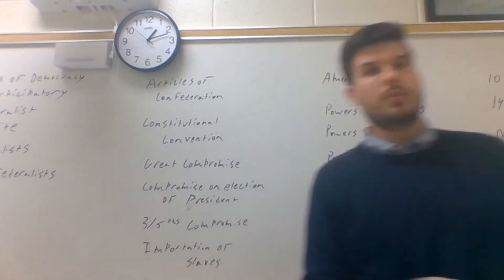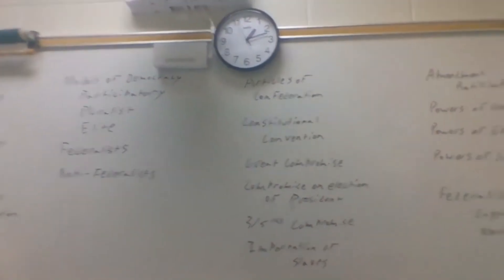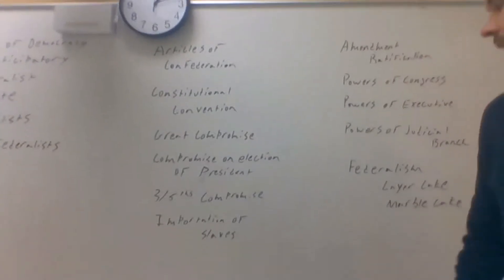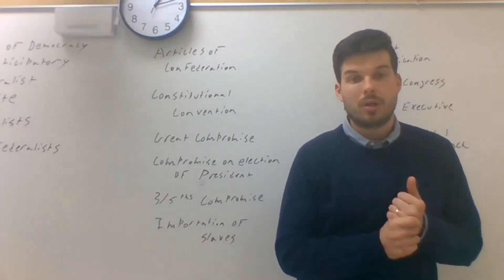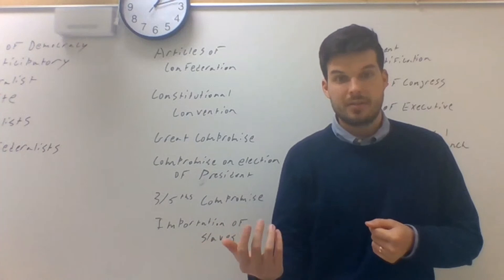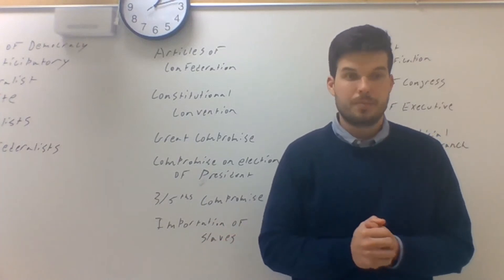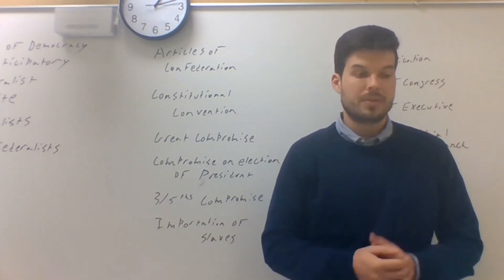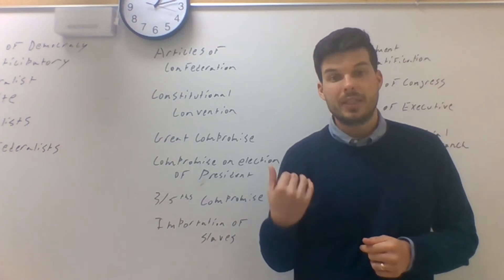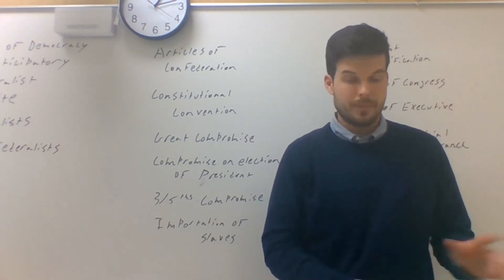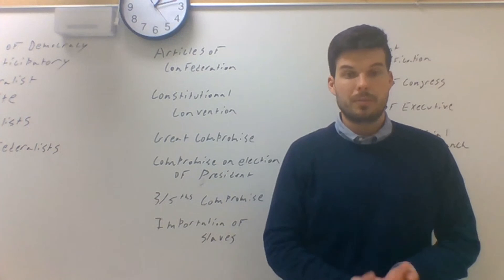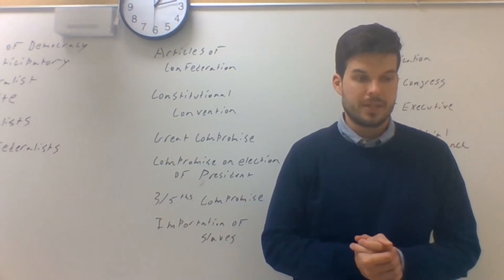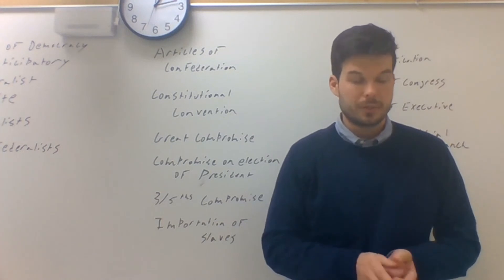So that's one of the key ideas with this Constitution is that it is full of compromises. We have the great compromise. We have large states and we have small states. The large states say that power in the government should be determined by population. Small states say that it should be equal representation among the states, leading us to a bicameral legislature, a House and a Senate. House determined by population, Senate determined equally with equal representation, basically. So we have a bicameral legislature.